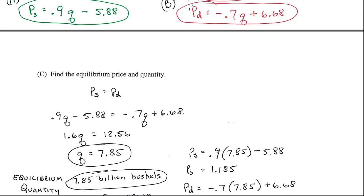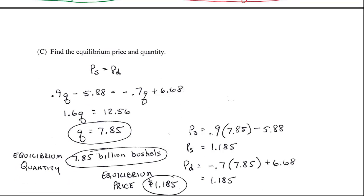Now, you don't have to do this, but I wanted you to see that regardless of what supply or what price equation you put it in, the equilibrium price is the same because it has to be. That's what equilibrium price is. So equilibrium price is 1.185. Equilibrium quantity is 7.85 billion bushels.